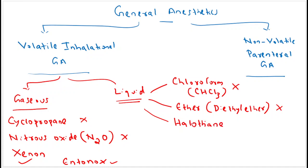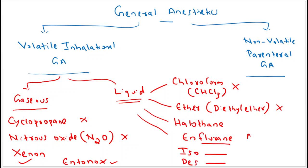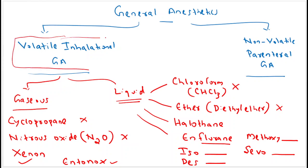The third example in the liquid category is halothane compounds, which are clinically used. Another group is the fluorine drugs, and the examples are enflurane, isoflurane, desflurane, and methoxyflurane. Halothane and fluorine drugs are normally used clinically, whereas chloroform and ether compounds are not used at all.